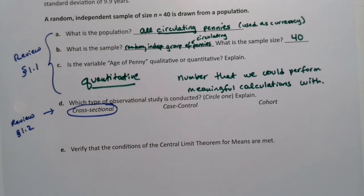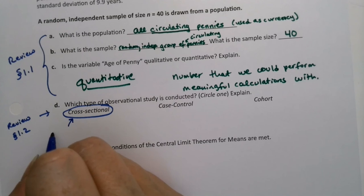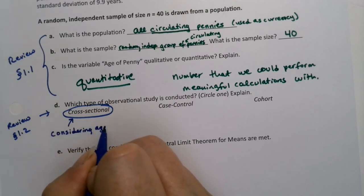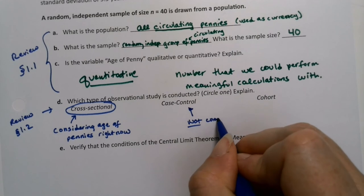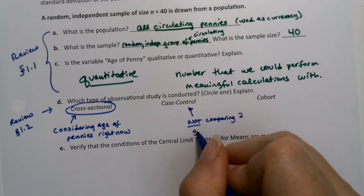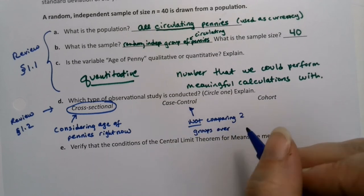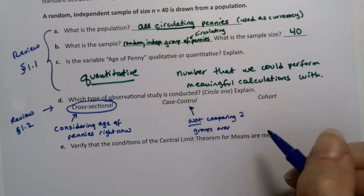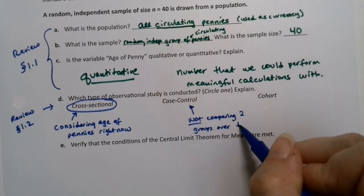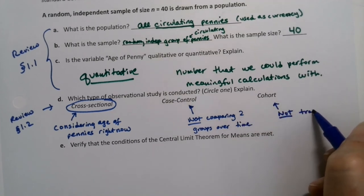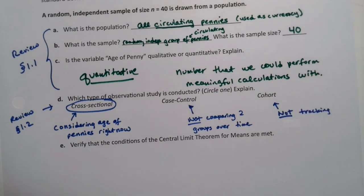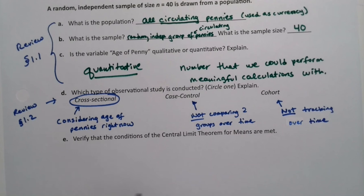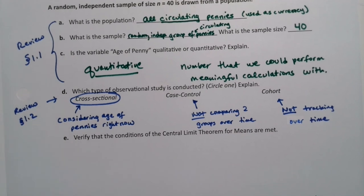We're not comparing pennies that did one thing versus pennies that did another thing. That's case control. We're not doing that. And we're definitely not following the pennies over time. For like the next 30 years, we follow these pennies. Nope. So it's cross-sectional. We're just getting a snapshot in time of what the pennies are doing. So we're considering age of pennies right now. Case control is more when you're comparing two groups over time. And they're not two groups you design. That's a design experiment. It's two groups that just randomly selected themselves like smokers versus non-smokers. But we're not doing that. And we're definitely not following them, not tracking over time, over a period of time. So it's cross-sectional. You're just getting a snapshot.